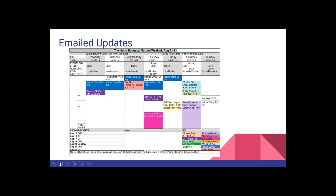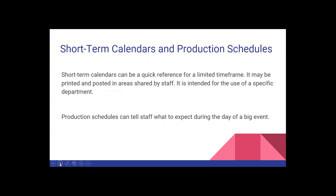In our weekly update, we take information from all different calendars — the Altru calendar and our shared master calendar — and combine it into Excel, which can be accessed online, through phones, or printed and posted. You can list who's in charge each day for rotating jobs, such as who's in the admissions kiosk, who's working in the store, or which horticulturalist is on duty. You can also list the day's happenings: field trips coming in, scheduled meetings, private or public events, areas closed due to construction, and upcoming events for future weeks. Special store or garden hours can also be posted on this document.